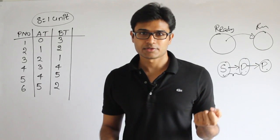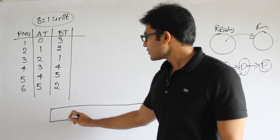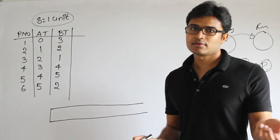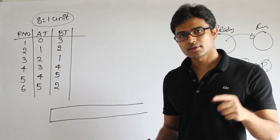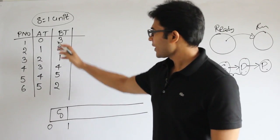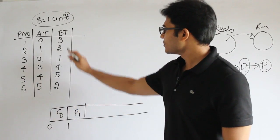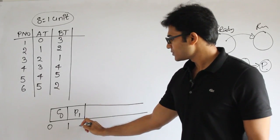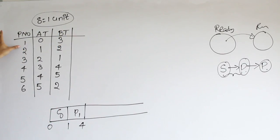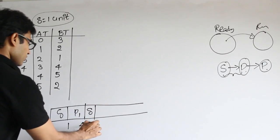The arrival time of the first process is zero, but before you schedule it you have to call the scheduler, do the context switching — so one unit of time is always wasted before running any process. Then P1 executes for three units of time, so one plus three equals four. After P1 finishes, the next process gets scheduled, but again there is a one-unit overhead, making it five.